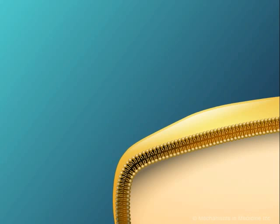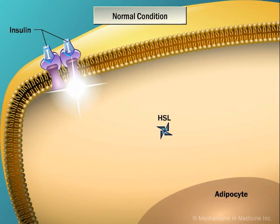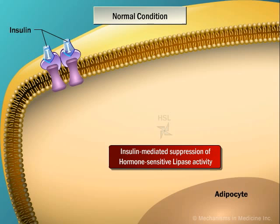Hormone-sensitive lipase is an intracellular lipase, or enzyme, that is capable of hydrolyzing lipids such as triglycerides. Located on the cell membrane are specific receptors for the hormone insulin. Under normal circumstances, when insulin binds to the insulin receptor, this triggers intracellular signals that suppress the activity of hormone-sensitive lipase.